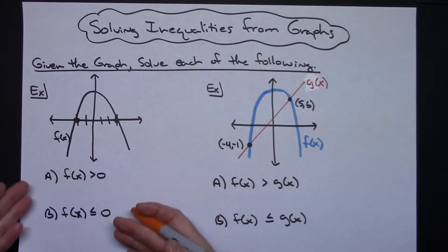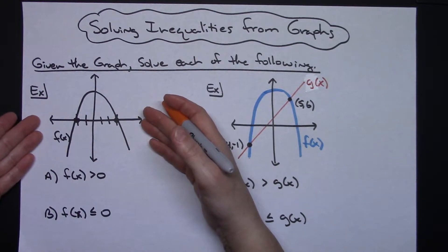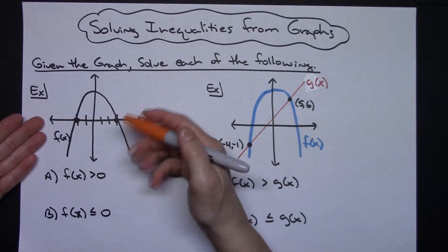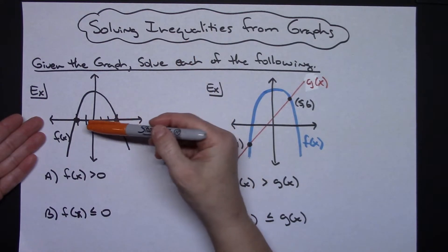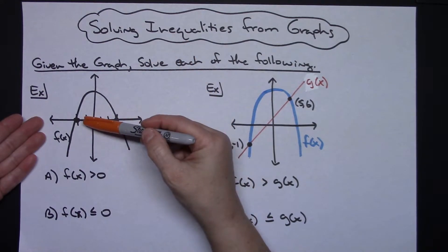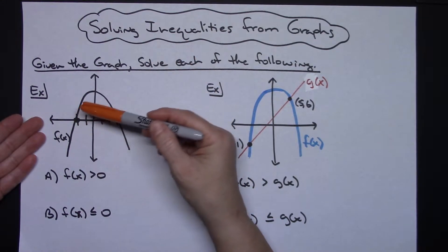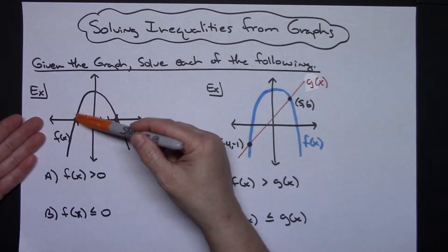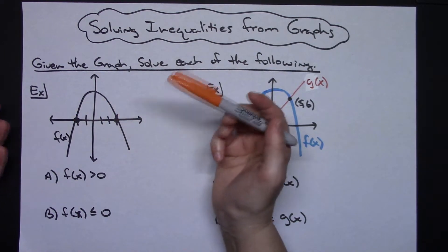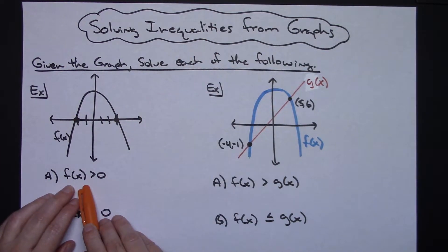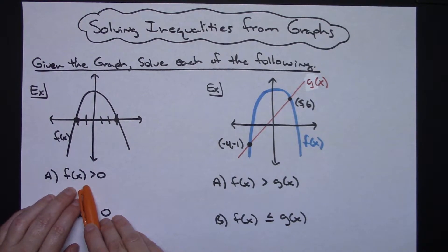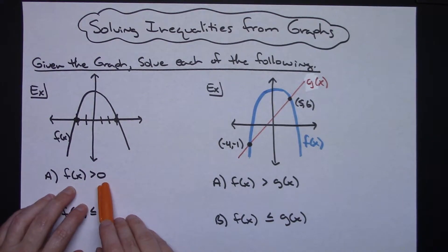For this first example we'll take a look at this upside-down quadratic. The function name is f of x. We can clearly see that it goes through the zeros of negative 2 and 3. So this first one — I need to solve f of x is greater than zero.